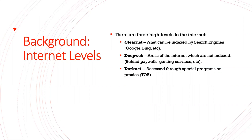The clear net is whatever can be indexed by search engines. If you can Google it or Bing it or whatever other search engines people use now, it can technically be called the clear net. The deep web is an area of the internet that's not indexed, which means you can't specifically search for it on Google or some other search engine.